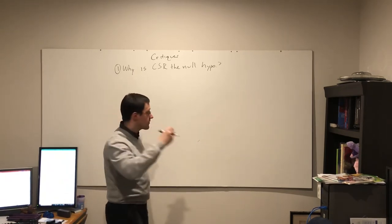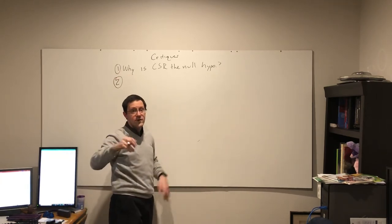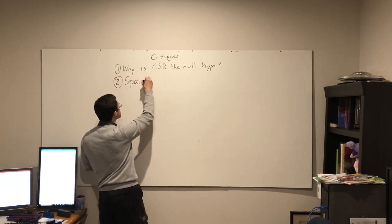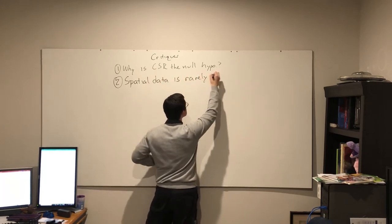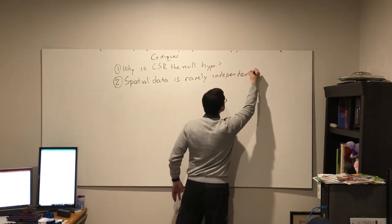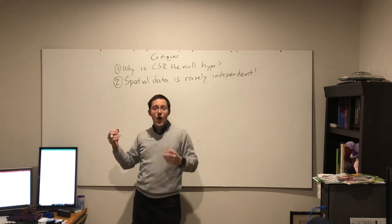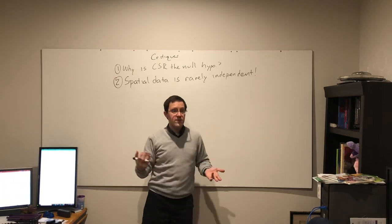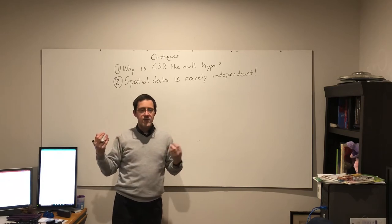The second critique, very much related because it is one of the assumptions of complete spatial randomness: spatial data, geographic data, rarely are they truly independent of each other. The response, the solution, is pretty much the same as with the first critique there.